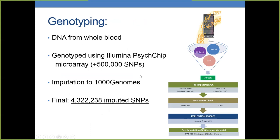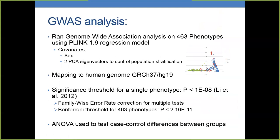After the PsychChip, we performed imputation to the 1000 Genomes, and after filtering we had 4.3 million imputed SNPs. We used a pipeline from the Broad that merged different algorithms using Birdseed, GenCall, and zCall for rare variants. The pre-imputation QC was standard. We checked relatedness and excluded relatives from the case-control approach. Imputation was done using IMPUTE2, with a minor allele frequency cutoff of 0.05 to work only with common SNPs.